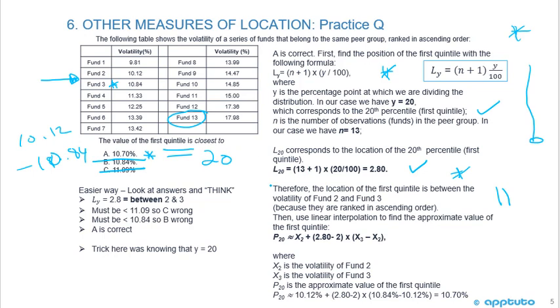We knew that it was A. We didn't have to go on and do this interpolation because the numbers just had to be 10.7. Now, if they gave us three choices like 10.7, 10.5, and 10.4 something, then you'd have to finish off and do the interpolation.